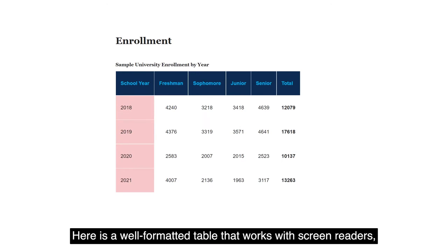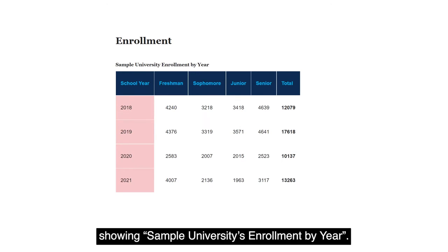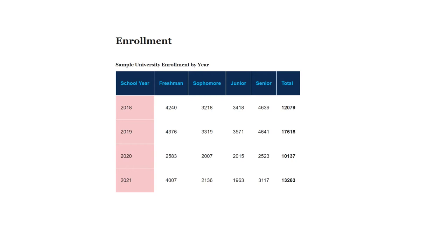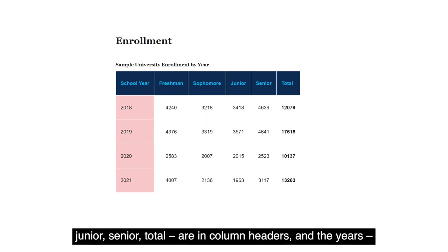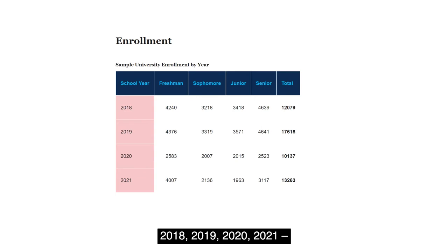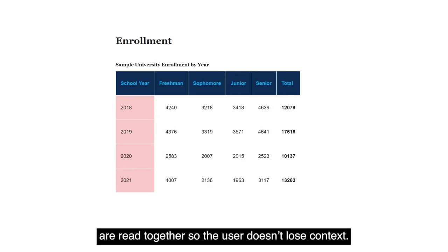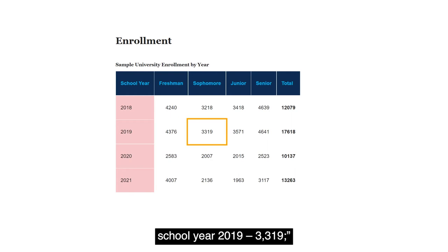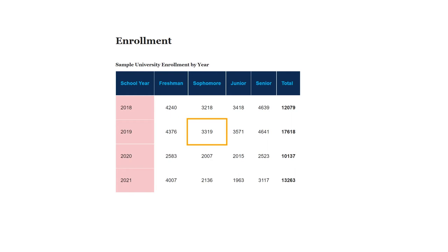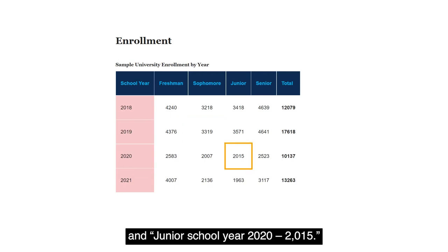Here is a well-formatted table that works with screen readers, showing sample university enrollment by year. It makes use of column and row headers to ensure the words across the top — School Year, Freshman, Sophomore, Junior, Senior, Total — are in column headers, and the years 2018, 2019, 2020, 2021 are communicated in row headers. The enrollment numbers in data cells are read together so the user doesn't lose context. For example, a person who is blind navigating two different data cells using a screen reader would hear: "Sophomore, School Year 2019, 3319" and "Junior, School Year 2020, 2015."